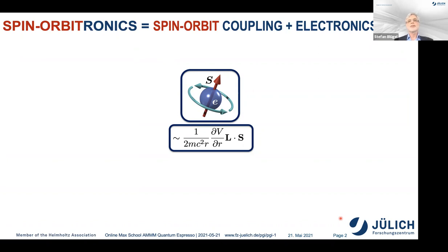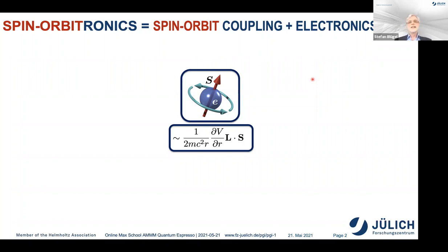Maybe some of you have never heard about the word spin-orbitronics before. But you may notice the word spin-orbit coupling in spin-orbitronics. Spin-orbitronics is a compound word developed from spin-orbit coupling and electronics. The spin-orbit interaction, as you may vaguely remember from university lectures, is the coupling of the spin degree of freedom to the orbital motion of the electron. The orbital motion of the electron in a crystal means, of course, the motion of electrons in the crystal.